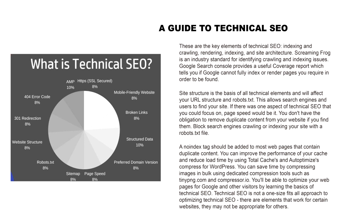You can block search engines from crawling or indexing your site with a robots.txt file. A noindex tag should be added to most web pages that contain duplicate content. You can improve the performance of your cache and reduce load time by using Total Cache and Autoptimize plugins for WordPress.